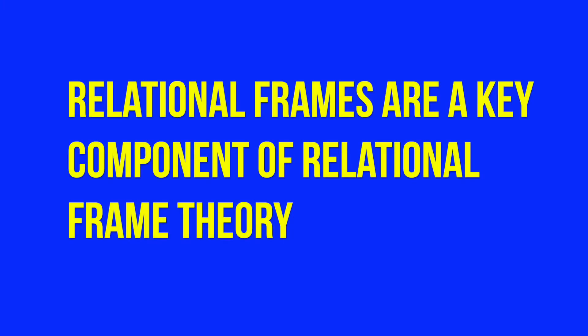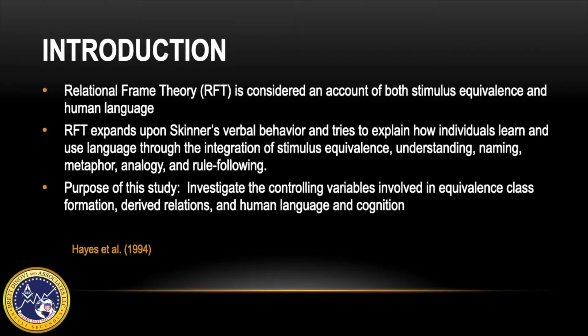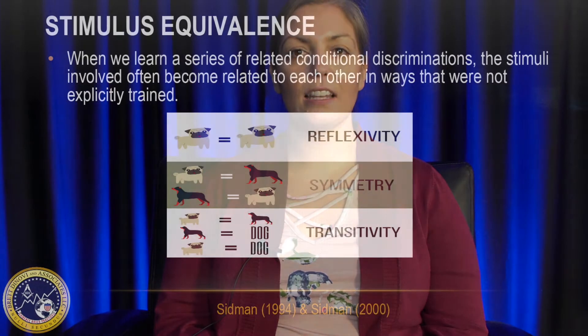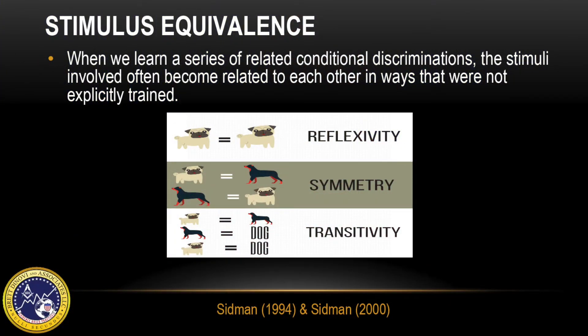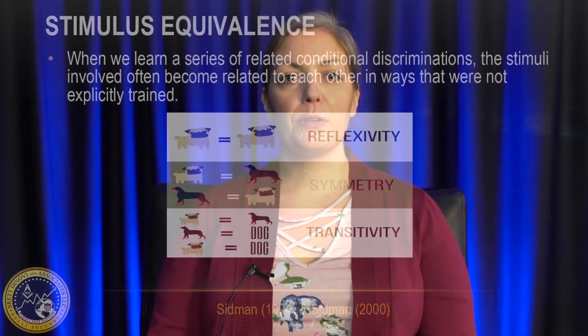Relational frames are a key component of relational frame theory, which is considered an account of both stimulus equivalence and human language. According to Sidman 1971, stimulus equivalence refers to the process of learning a series of related conditional discriminations. The involved stimuli often become related to each other in ways that were not explicitly trained, and thus provides a behavioral basis for everyday correspondence between words and things, between what we say and what we do, and between rules and contingencies. Further, stimulus equivalence has been linked directly to the behavior analysis of human language in a variety of contexts.